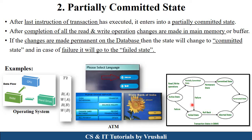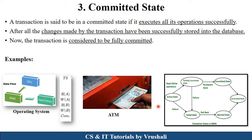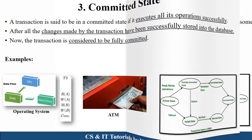From the partially committed state, the transaction can either fail or move to the committed state. The Committed State means operations have been successfully performed and all data is permanently stored into the hard drive. In the OS example, after the CPU performs read/write operations in RAM and they complete successfully, the data is committed to the hard drive. In the ATM example, when your money is successfully withdrawn — that is the committed state, meaning the operation is fully done and data is stored in the database.